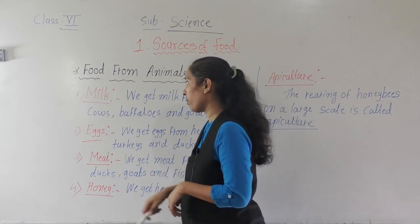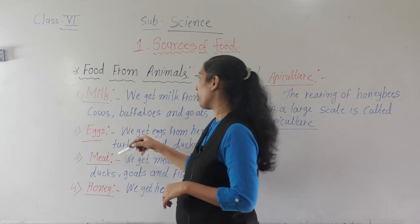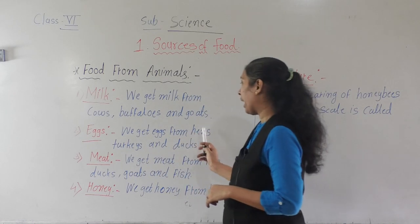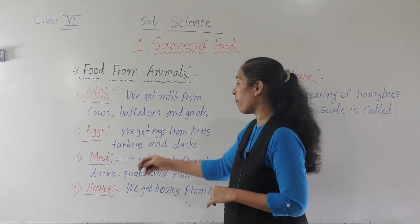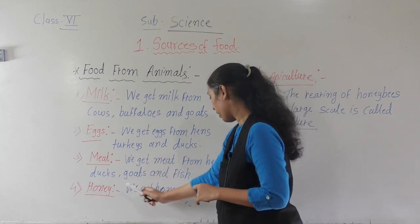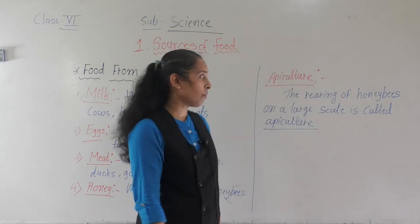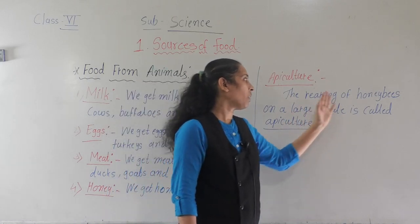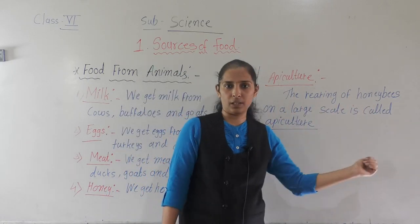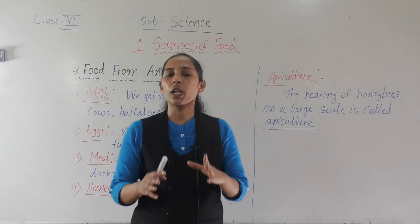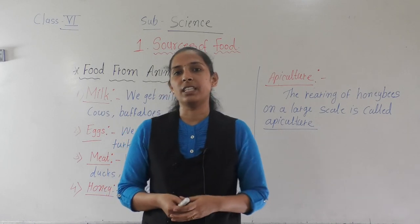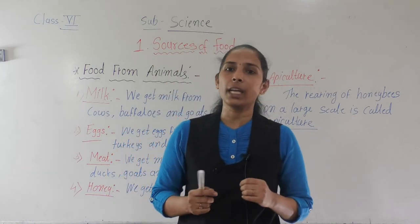Let us revise what we have learned. We get milk from cows, buffaloes, and goats; eggs from hens, turkeys, and ducks; meat from hens, ducks, goats, and fish; and honey from honeybees. The rearing of honeybees on a large scale is called apiculture. This is all for today's lecture; we will discuss the next point in the next class. Thank you.